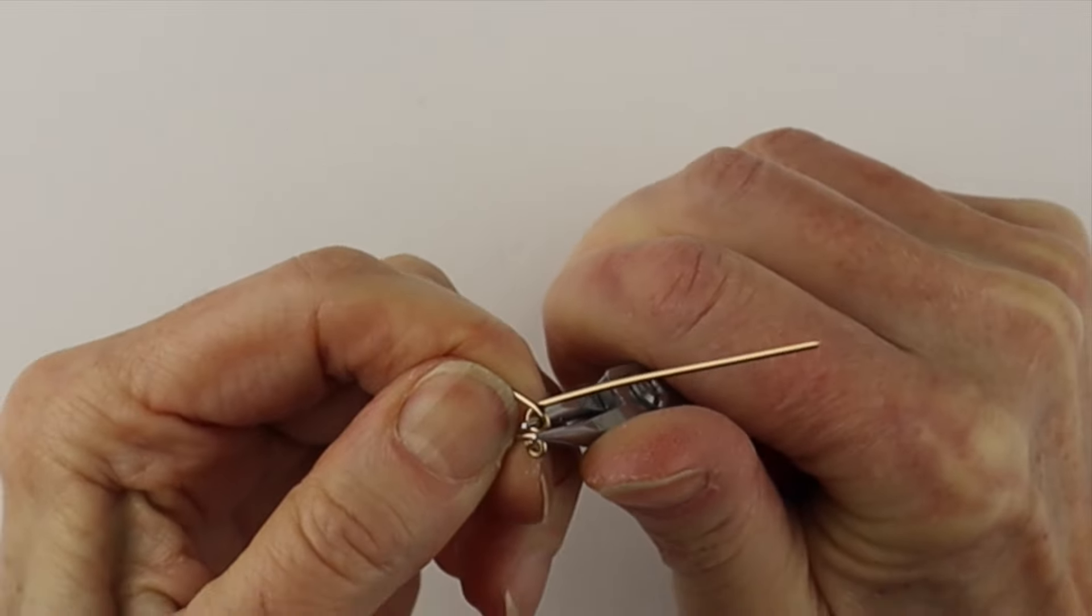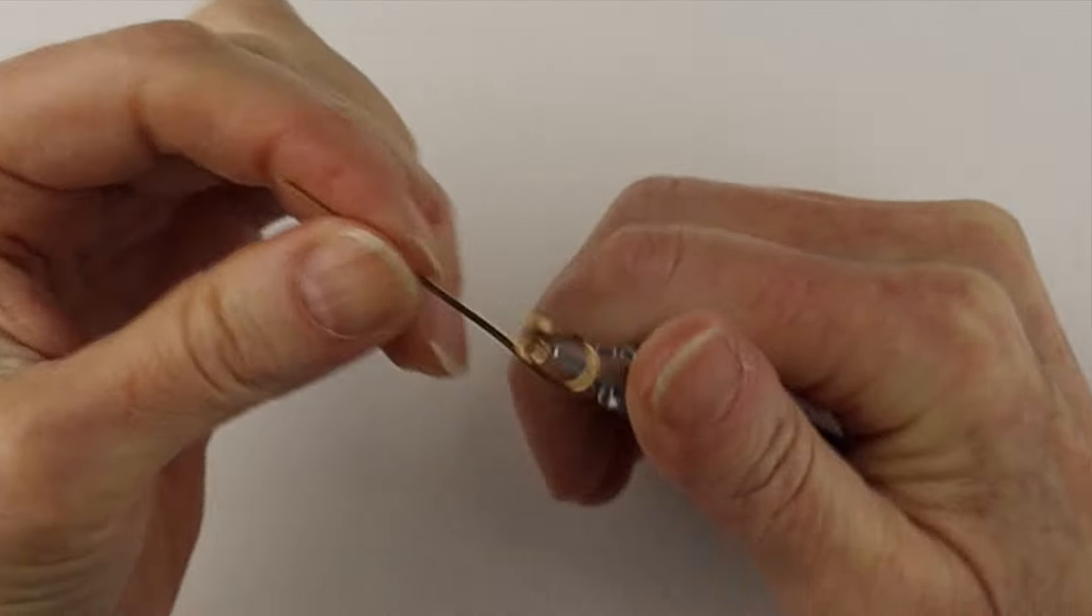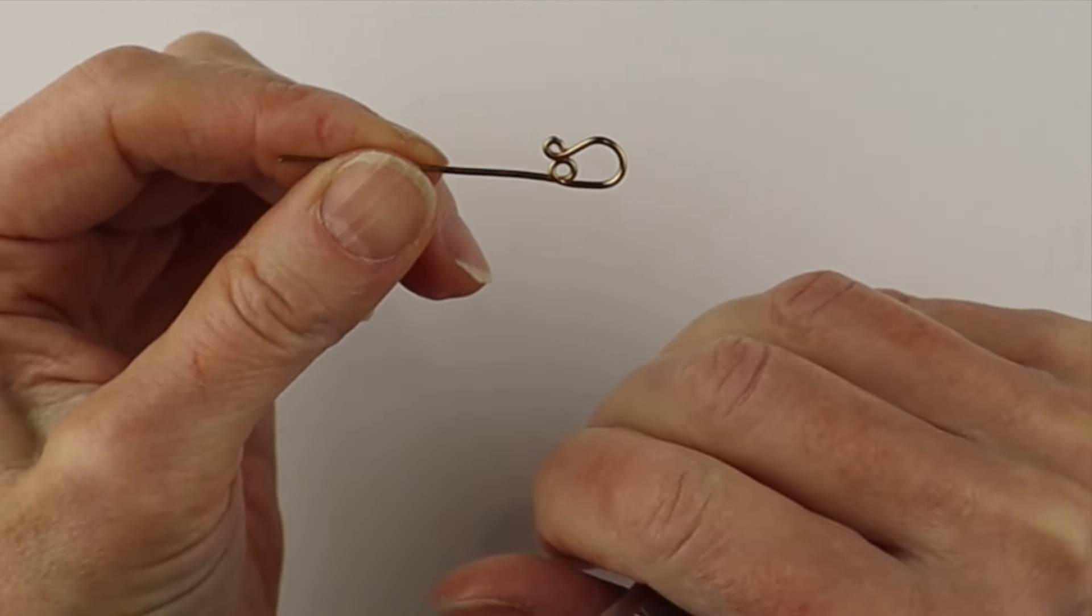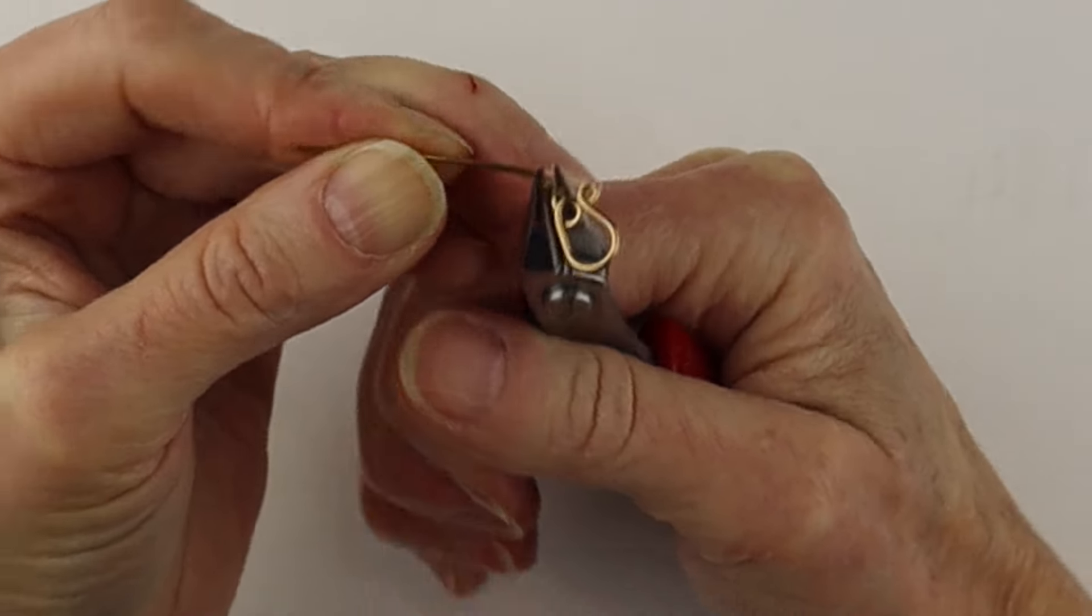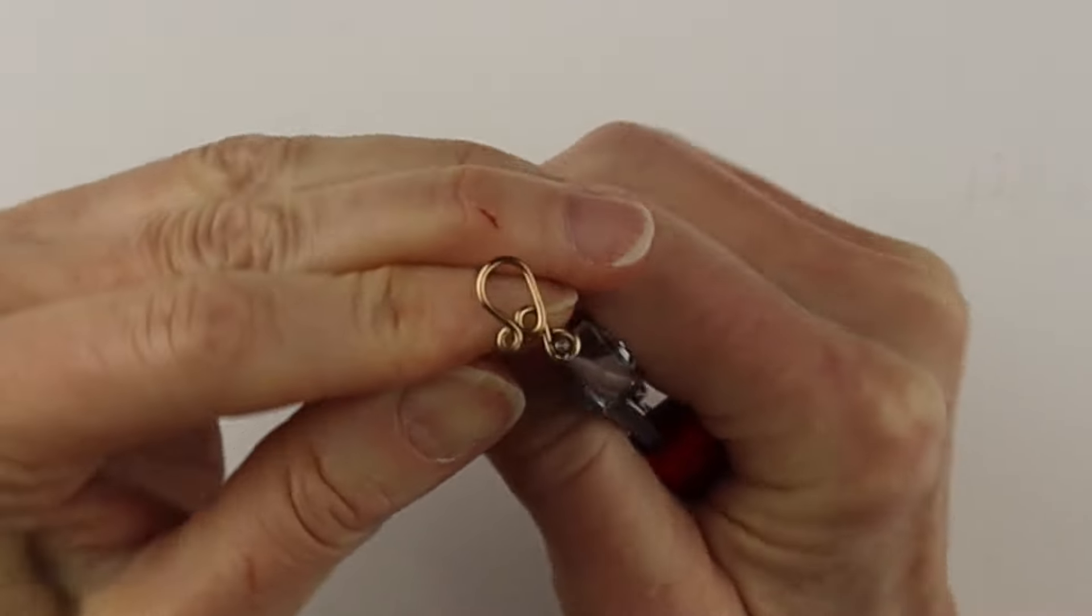Then we just want to do a little loop there again, just to give it a bit of a buffer. Pretty well parallel to that loop, we're going to take this one around. This design can be simpler because the wire is thicker and stronger.